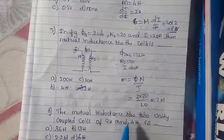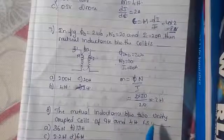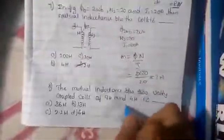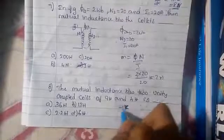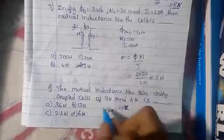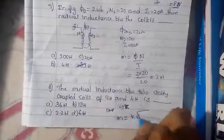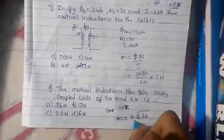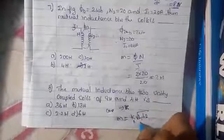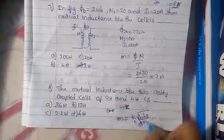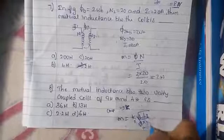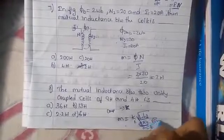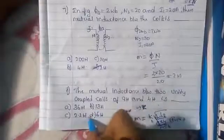Next question: find the mutual inductance between two unity-coupled coils of 9 Henry and 4 Henry. Unity coupled means k = 1. Using M = k × √(L1 × L2) = 1 × √(9 × 4) = √36 = 6 Henry.